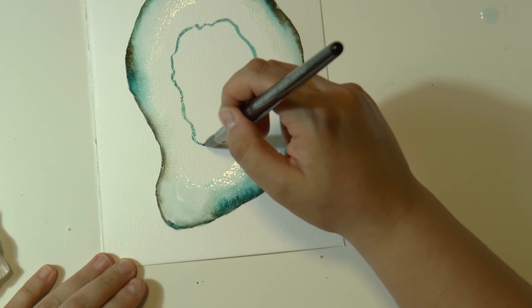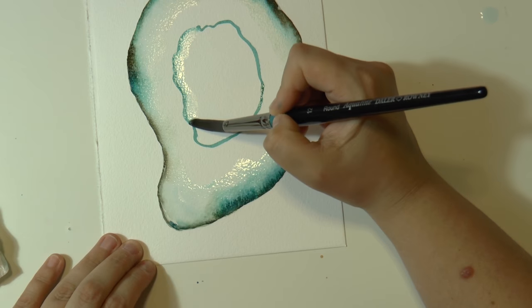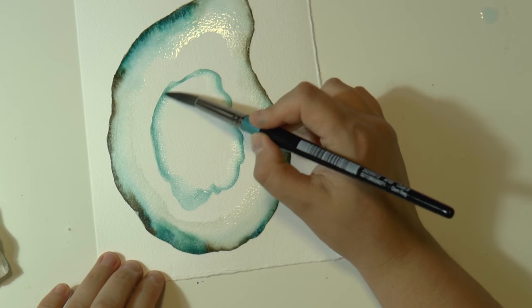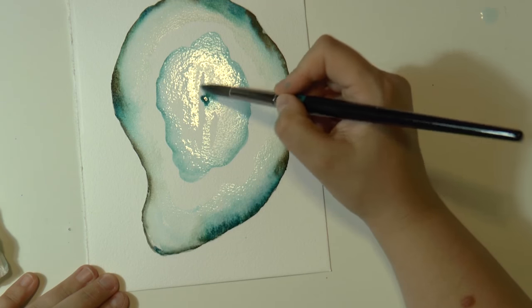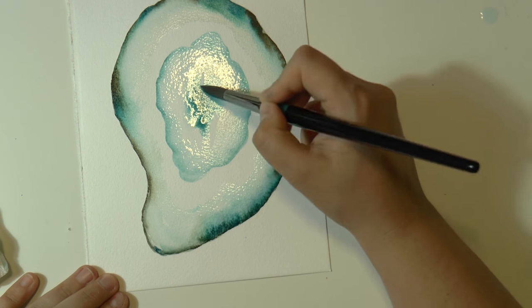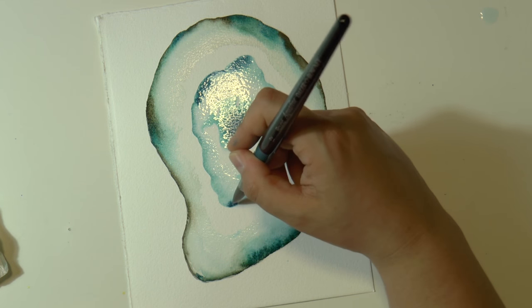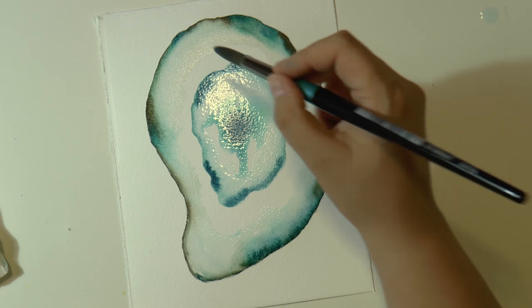So now let's do the center part of the geode which usually is the part where the color is more concentrated. So this time I start with my main color which is this teal color. As you can see I concentrate all the color in the center of it and then I spread it and work it in the edge, adding more blue and more green and a little bit of brown again.